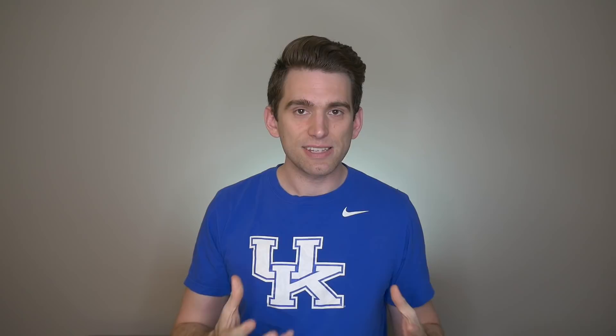AC joints typically get injured from a direct blow to the side of the shoulder whenever the arm is adducted or in at the side. Oftentimes this happens when someone lands on the shoulder or whenever they get hit in the shoulder, kind of pushing it into the body. If we look at a top view of the AC joint, imagine a big load coming in as if you're falling on that shoulder, and that can cause that stress in that AC ligament complex.